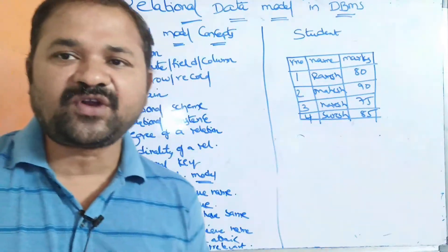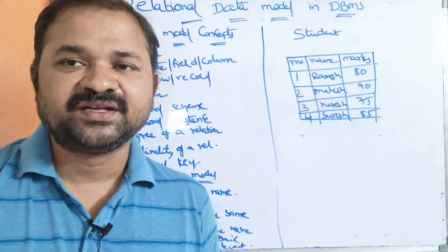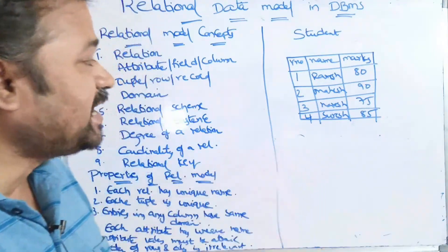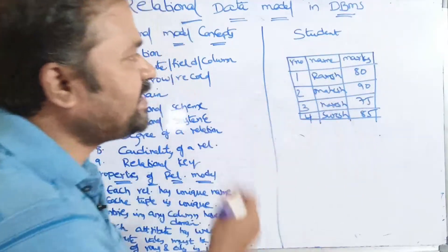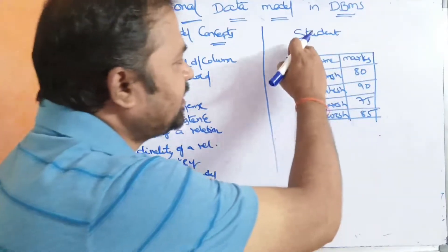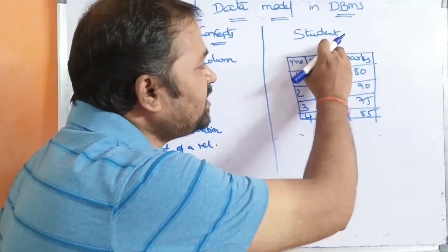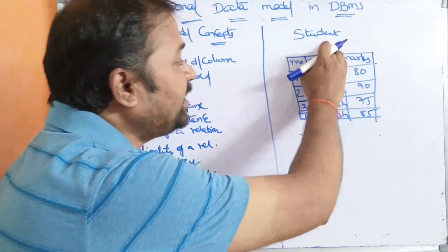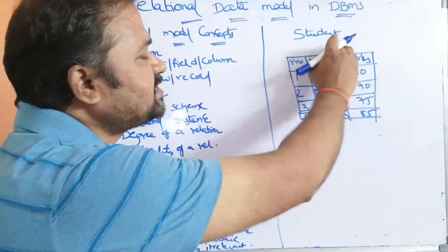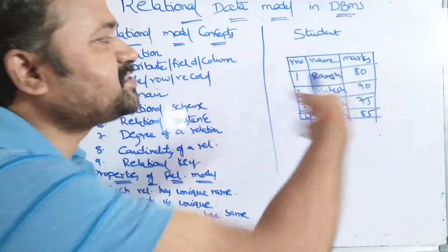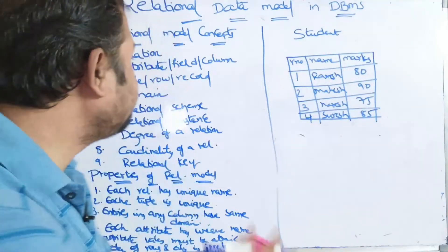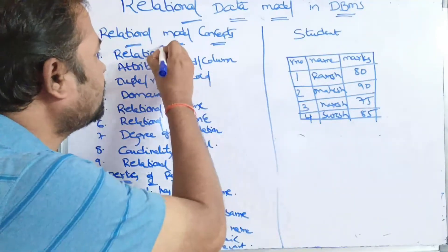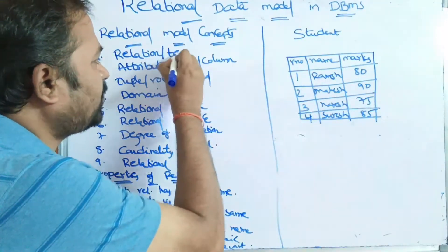So what is a relation? A relation is nothing but a table. This table is called as a relation. Here the name of the relation is 'student,' so this can also be called as the student table. Relation and table are both the same.